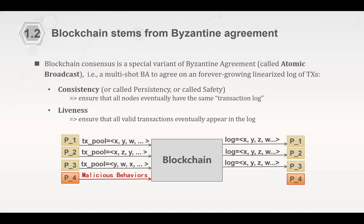The second property, besides consistency, is liveness — analogous to the termination property of Byzantine agreement. This ensures all valid transactions must eventually appear in the final output log. This is what we expect from blockchain consensus, sometimes called atomic broadcast or state machine replication.